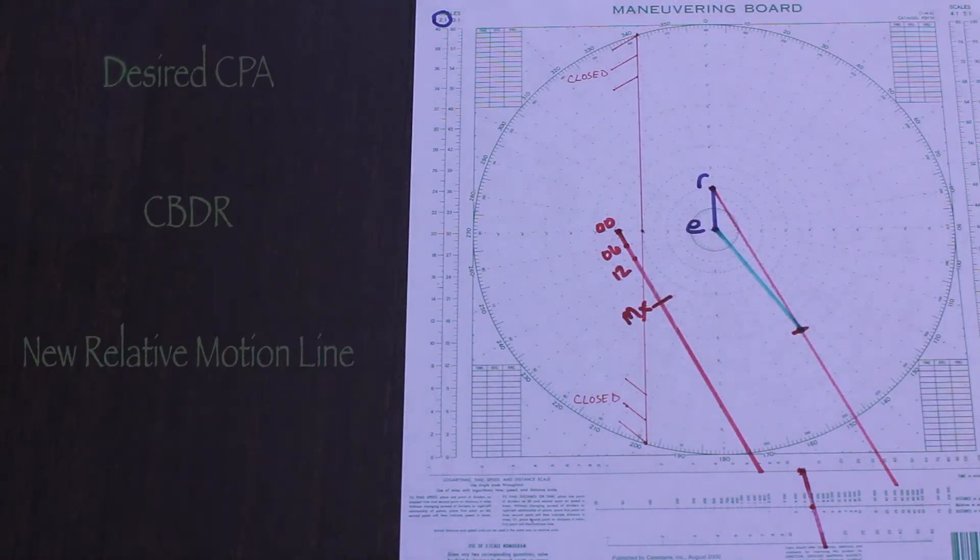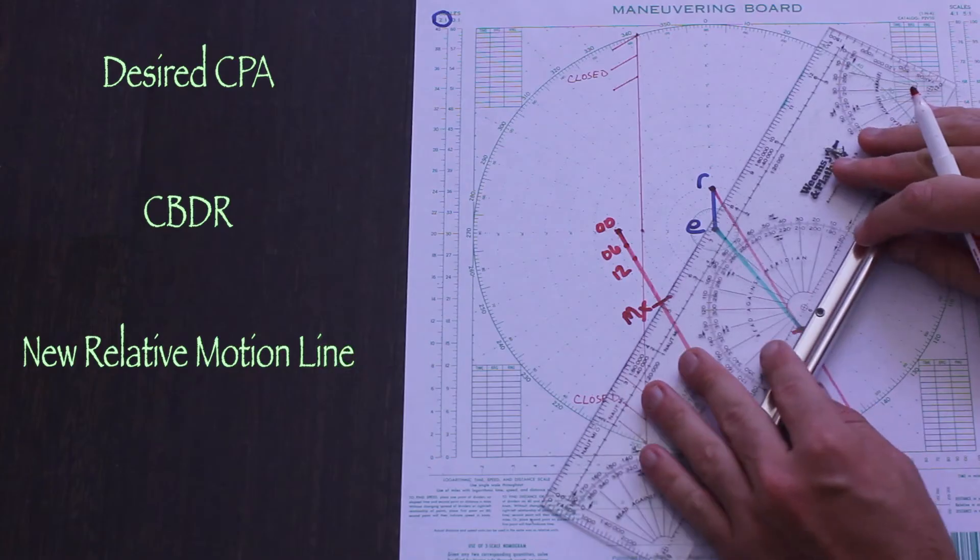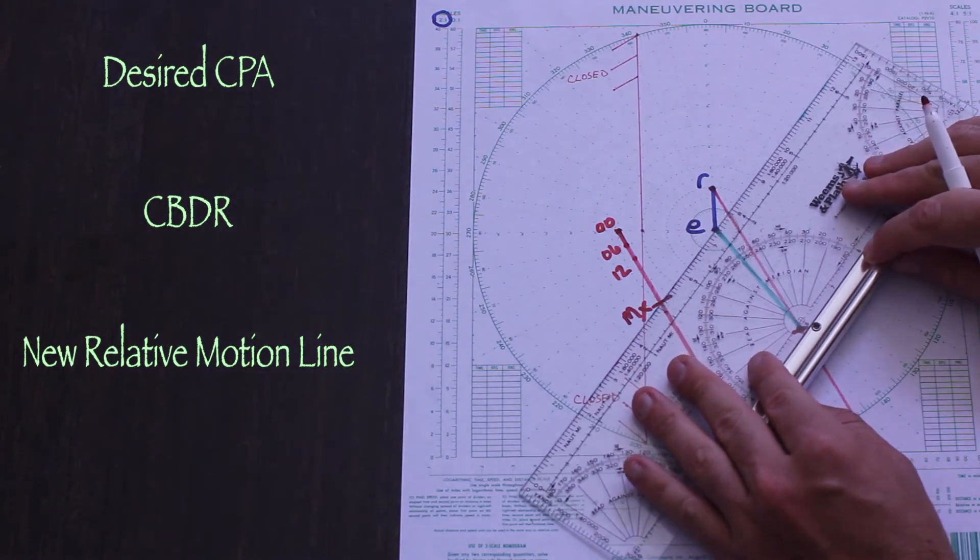And instead of avoiding the contact, we'll bring the new relative motion line right to us, making it CBDR by choice.